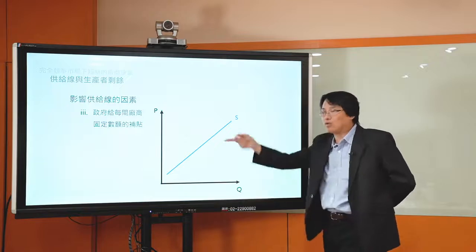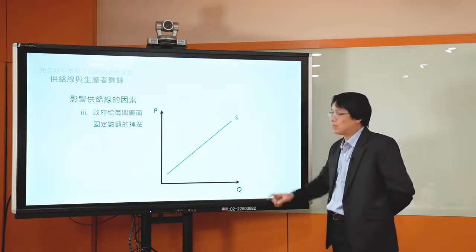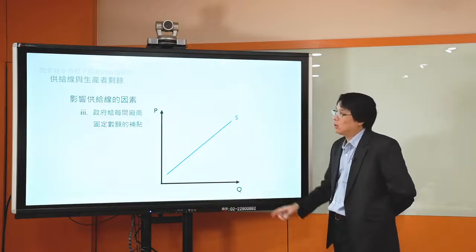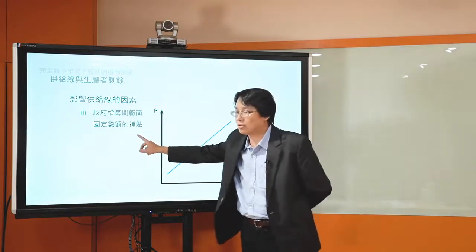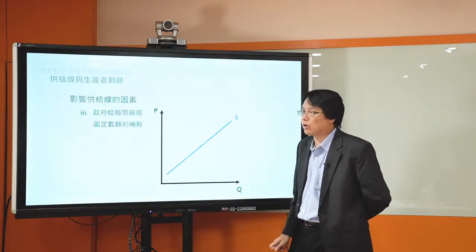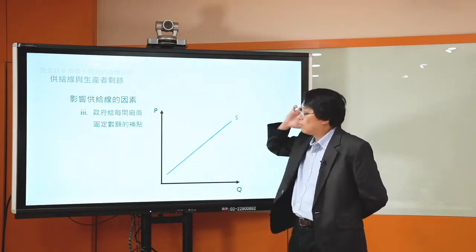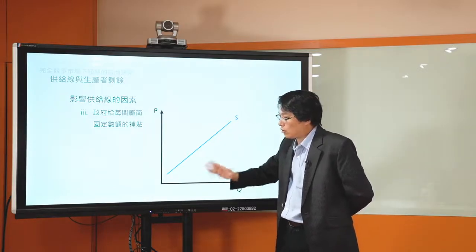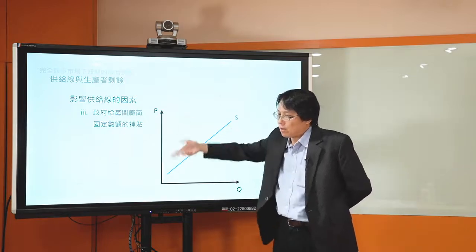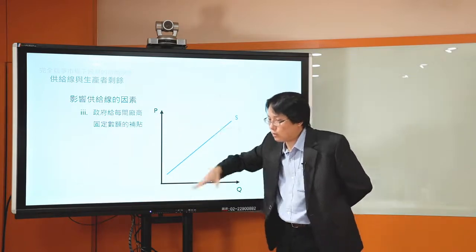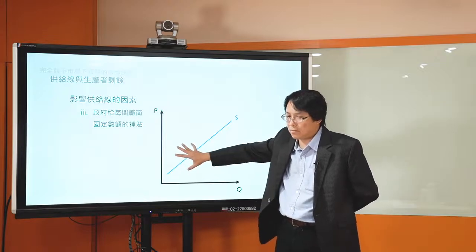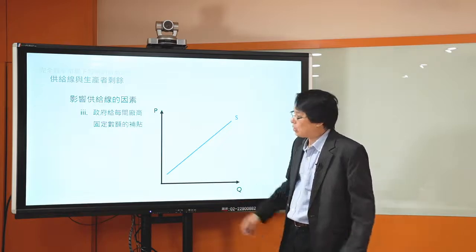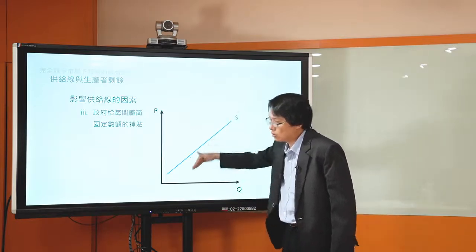結論是：如果政府給每間廠商固定數額的補貼，在短期是不會影響到廠商的供給行為，因為不會影響到他的邊際成本，只是變動到廠商的固定成本。你不會因為政府多給你這個固定數額補貼，就決定要多生產，因為還是要follow原來的做法：看P等於MC。這個時候邊際成本沒有變動，所以供給線不會動。連停業決策也不會影響，因為停業決策看的是價格跟變動成本之間的關係。